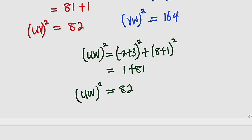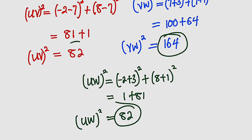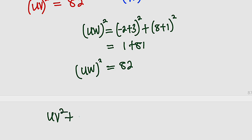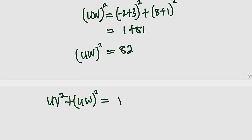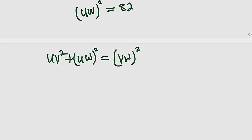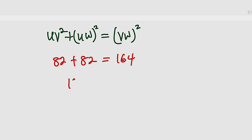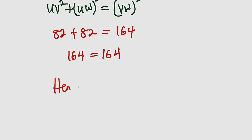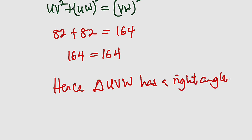We are going to apply Pythagoras' rule. VW² is the largest at 164, which is greater than 82 and 82, implying it is the hypotenuse. Testing: UV² + UW² = 82 + 82 = 164 = VW². The left-hand side equals the right-hand side. Hence triangle UVW has a right angle.